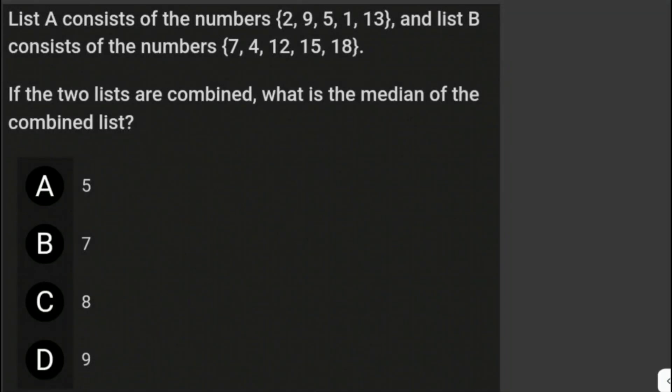List A consists of the numbers 2, 9, 5, 1, 13, and List B consists of the numbers 7, 4, 12, 15, 18. If the two lists are combined, what is the median of the combined list?